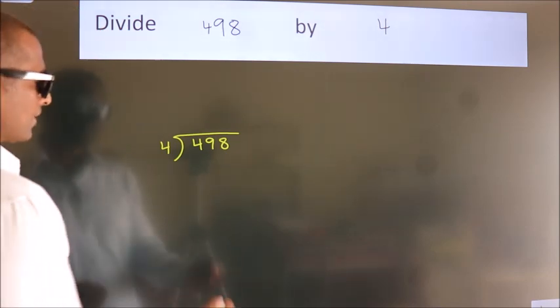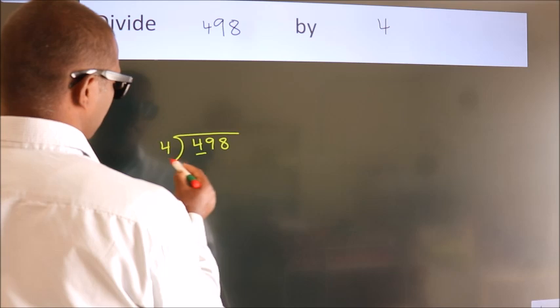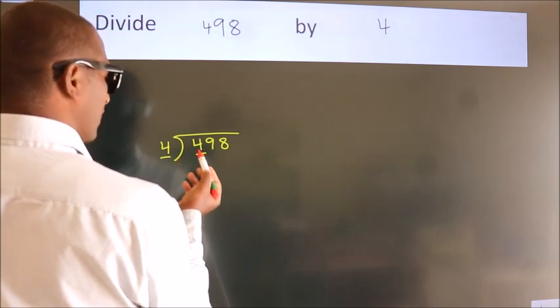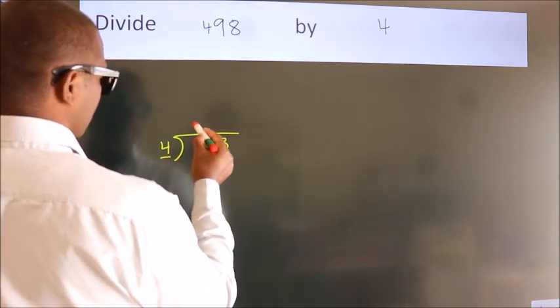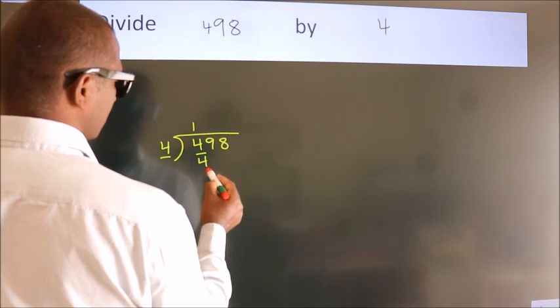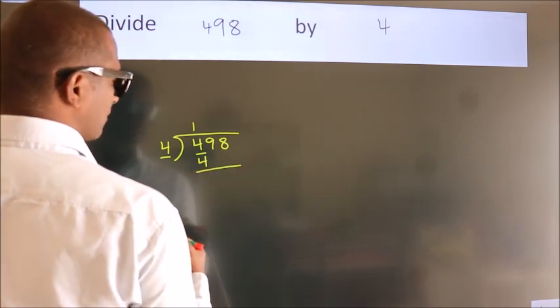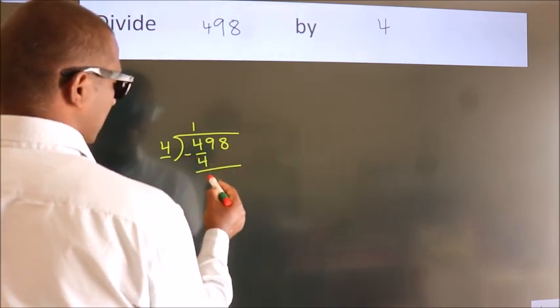Next. Here we have 4, here 4. When do we get 4? In the 4 table. 4 once is 4. Now we should subtract, we get 0.